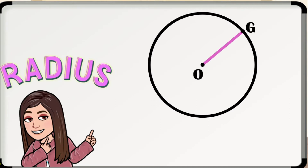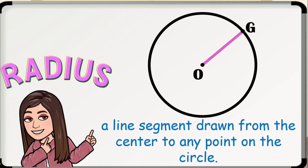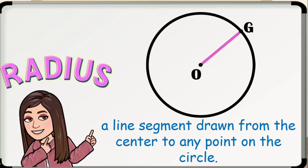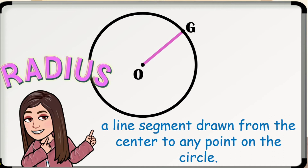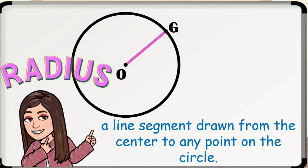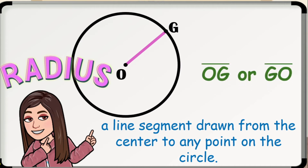If the fixed point is the center, then the fixed distance is what we call radius. Radius is a line segment drawn from the center to any point on the circle. In the figure above, we have line segment OG or line segment GO as the radius of the circle.